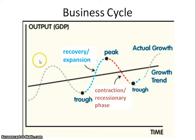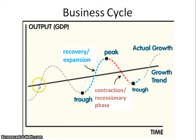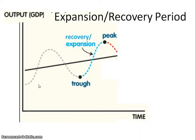This screencast is on the business cycle. We're going to be looking at the four different points of the business cycle, the two phases of the business cycle, and the impact that the business cycle has during these phases on GDP, unemployment, and inflation. It's first best to remember what GDP is — the final goods and services that are produced in a given year in an economy. What we're looking at is what is going on with your real GDP or your total GDP.